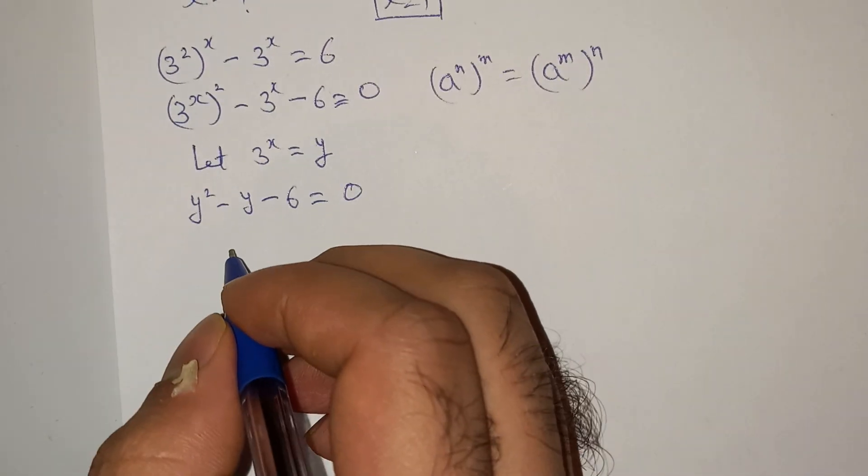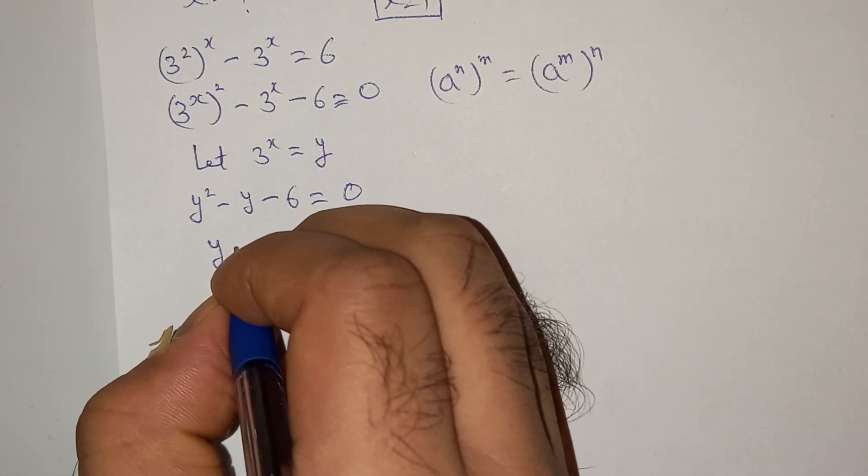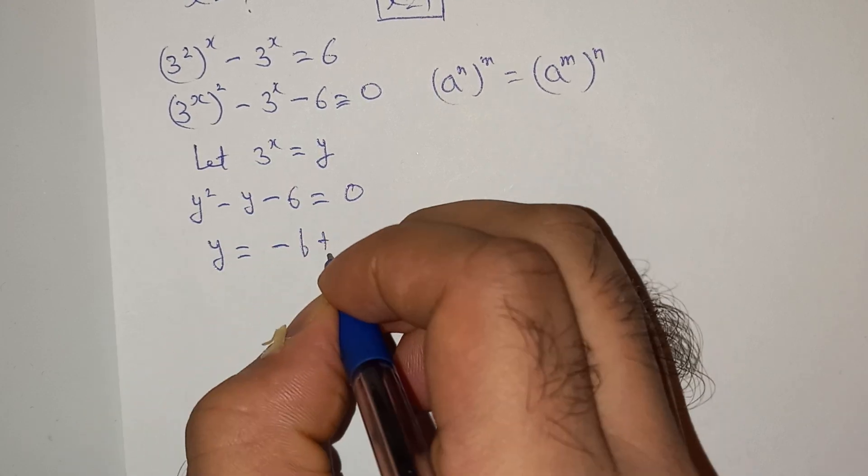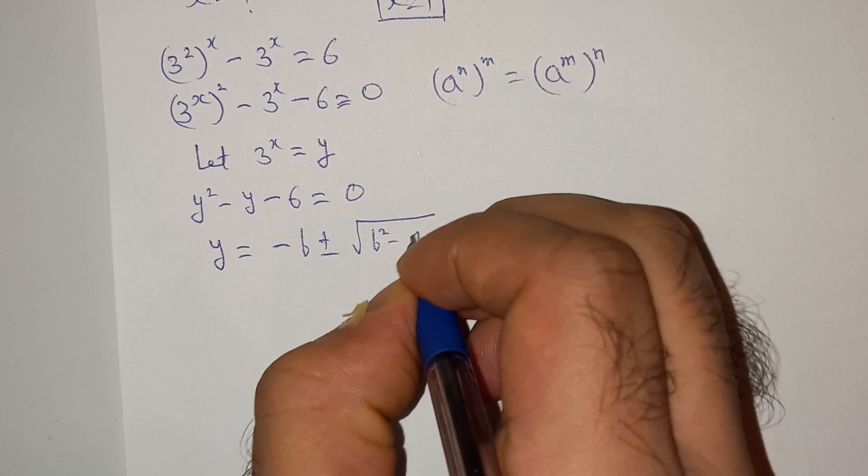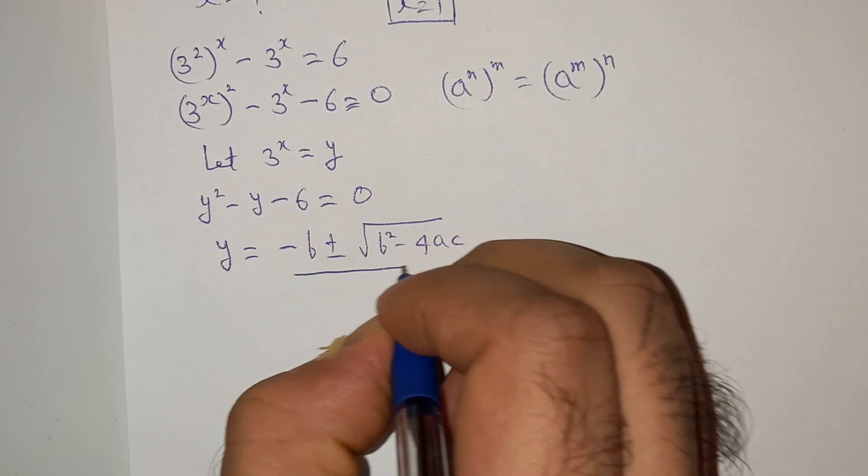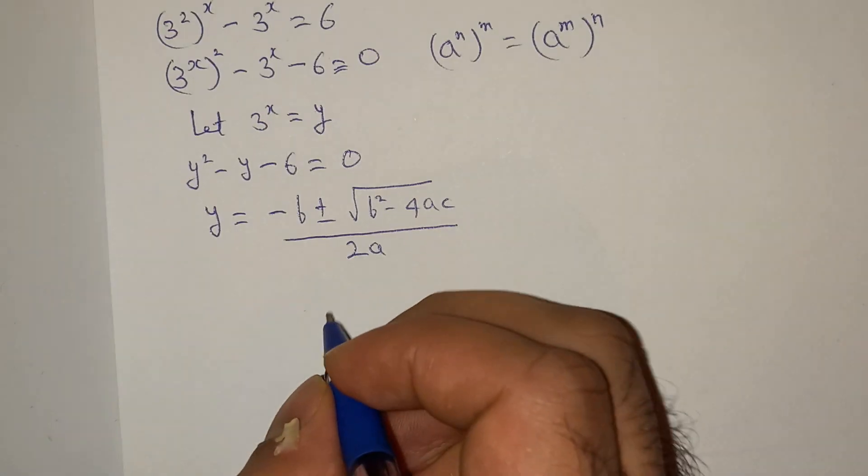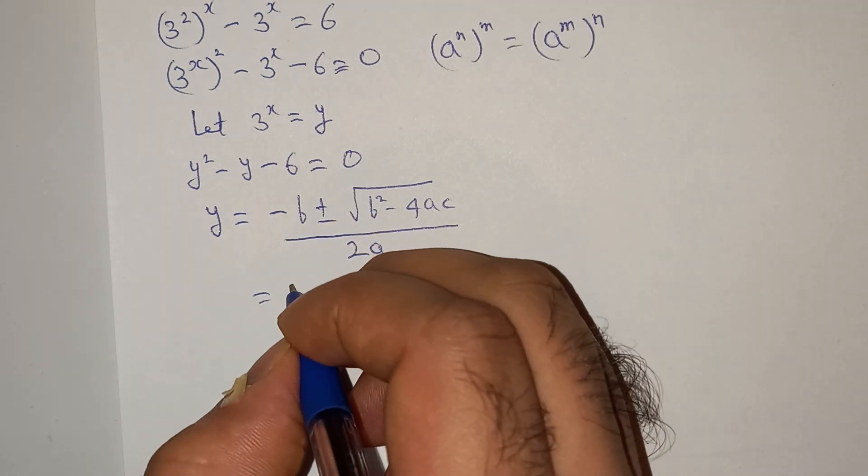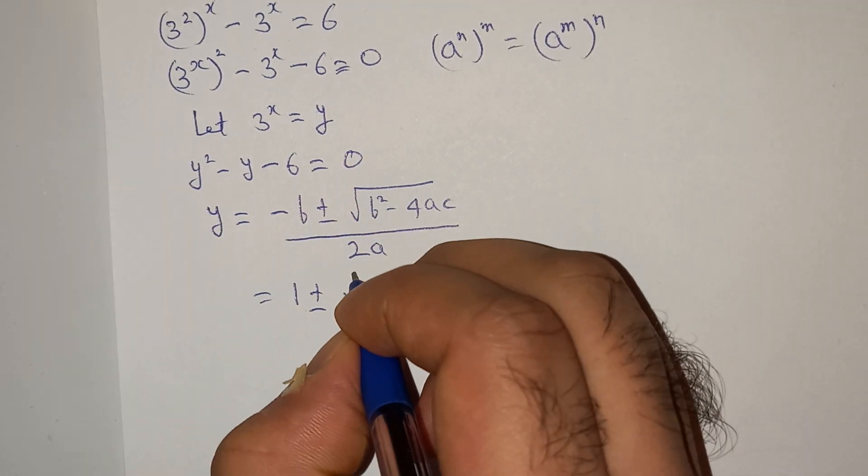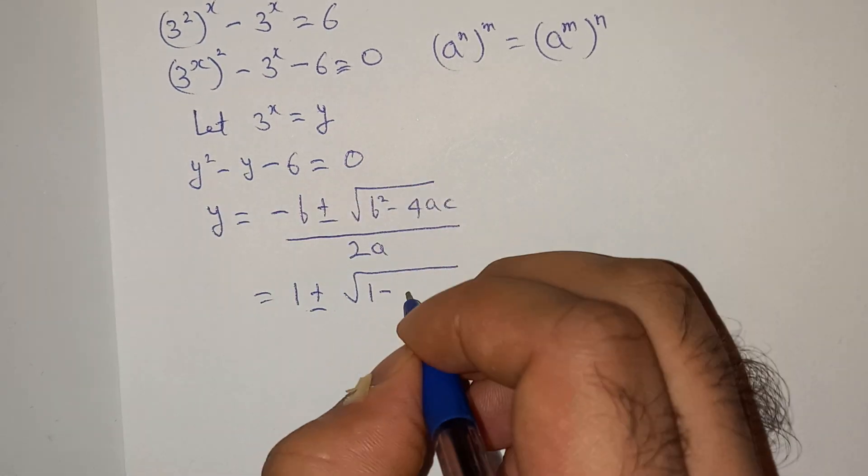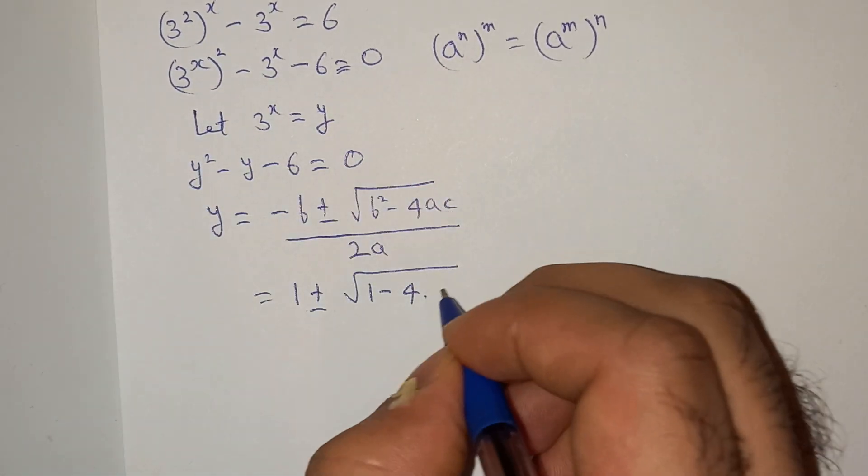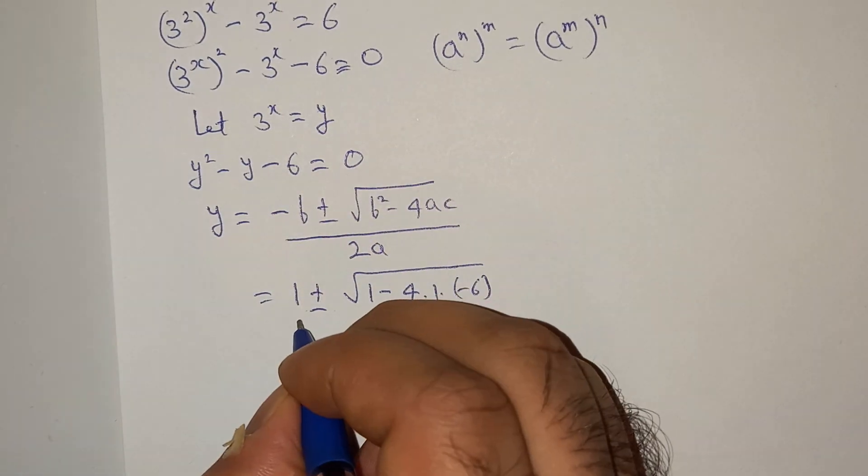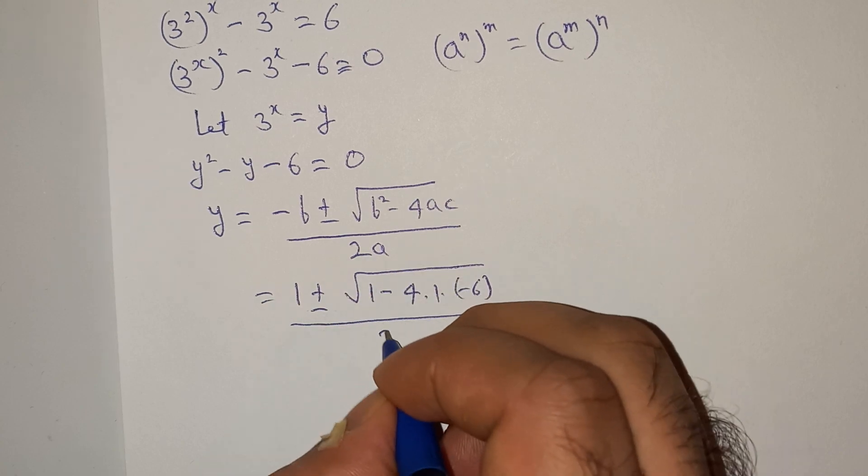So this is a quadratic equation and we can solve it. The value will be y equals to, we can write the formula, minus b plus minus under root b square minus 4ac divided by 2a. So minus b is minus minus 1, plus 1, the root b square is again 1 minus 4ac. a is 1 and c is minus 6 divided by 2 into 1.